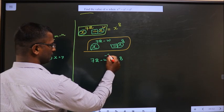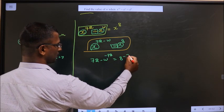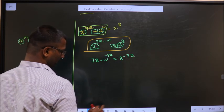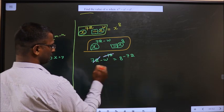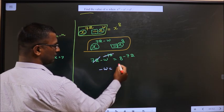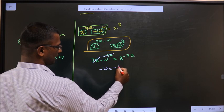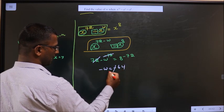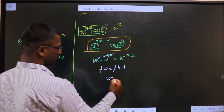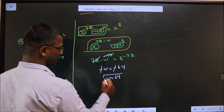Now subtract 72 on both sides. What do you get? Negative W equal to 8 minus 72 is negative 64. Cancel the negative. You get W equal to 64.